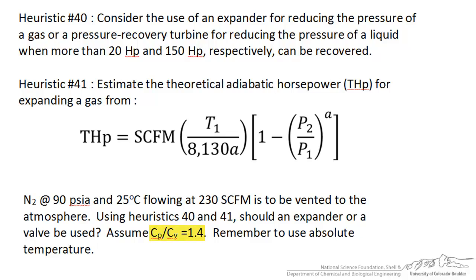We are given information as to the ratio of the heat capacities and a reminder that we should be using absolute temperature. Now what is not given, and something you would have to look up, is some information regarding the equation that you see in heuristic 41.